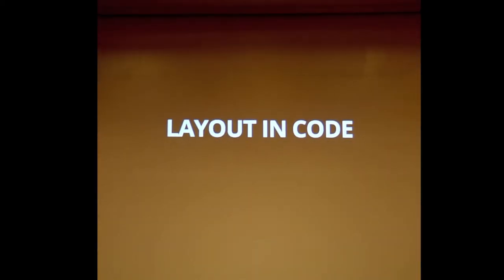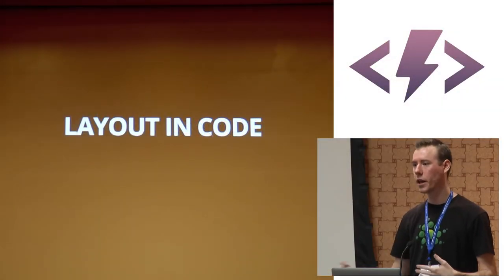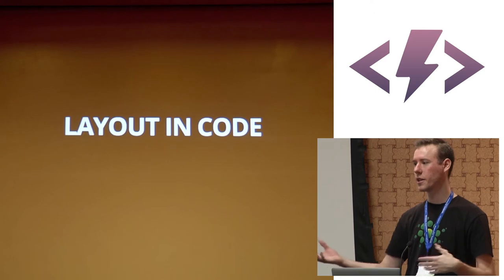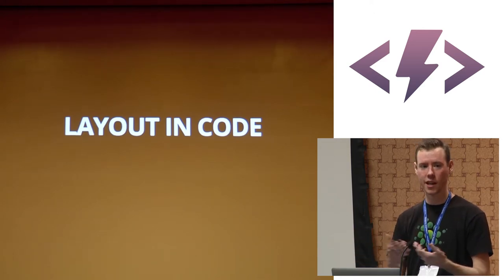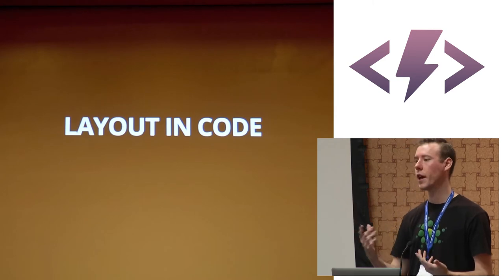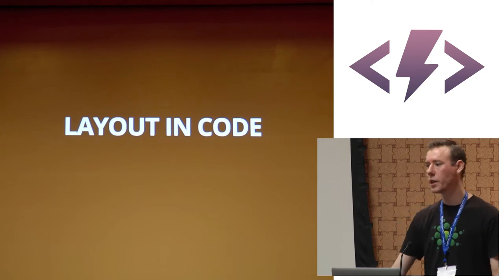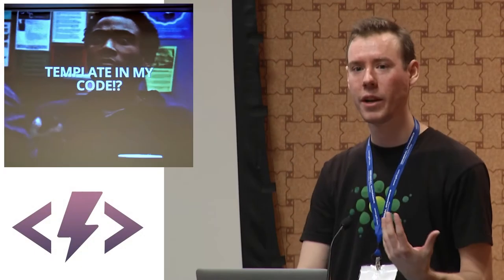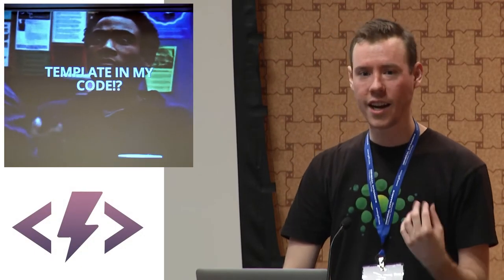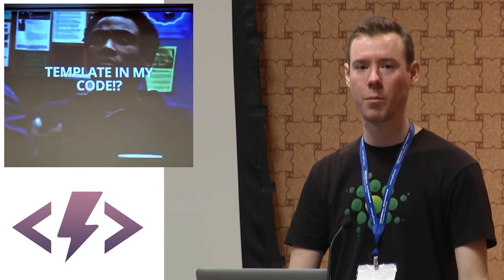Layout in code means there's no separate template. In Backbone you pick mustache templates and say I'm going to use this template in conjunction with this view. React doesn't do that — the layout is actually embedded into the rendering function. You can use JSX, which is an XML-like dialect, or pure code. Everyone freaks out because we've been told our entire careers that you have to separate presentation and logic.